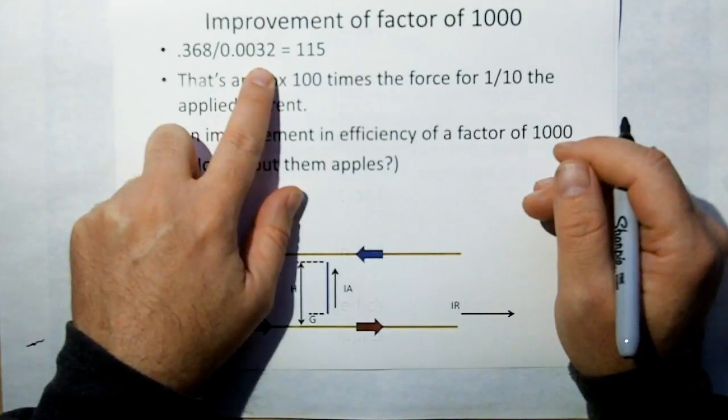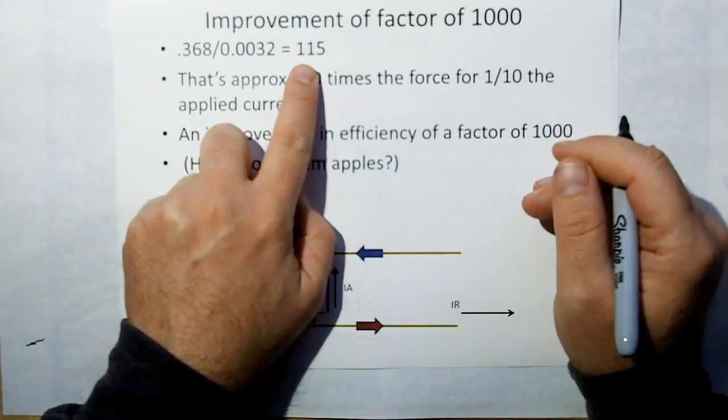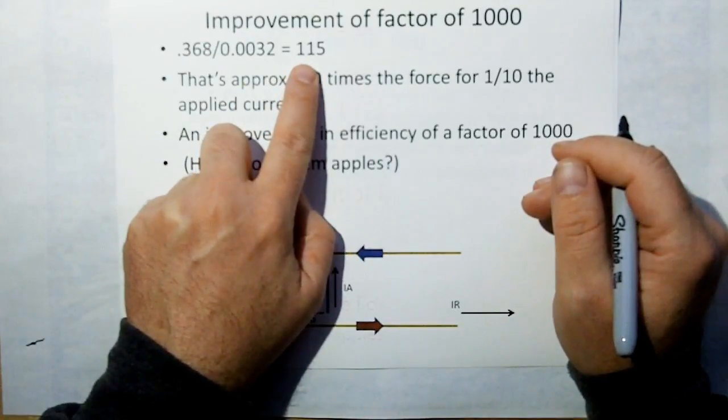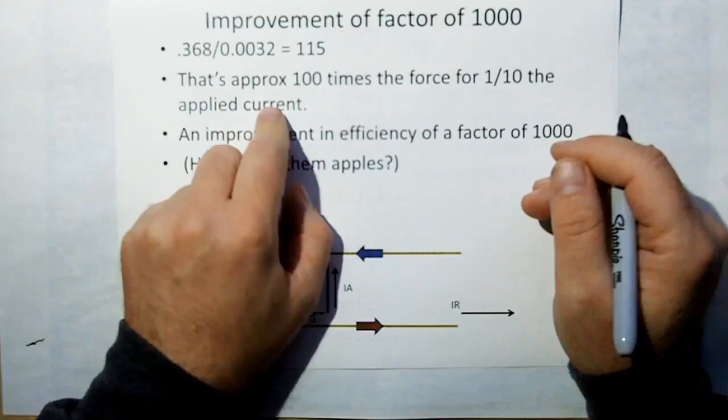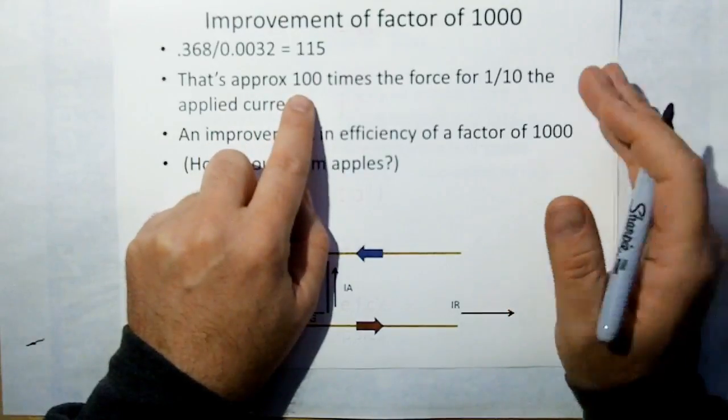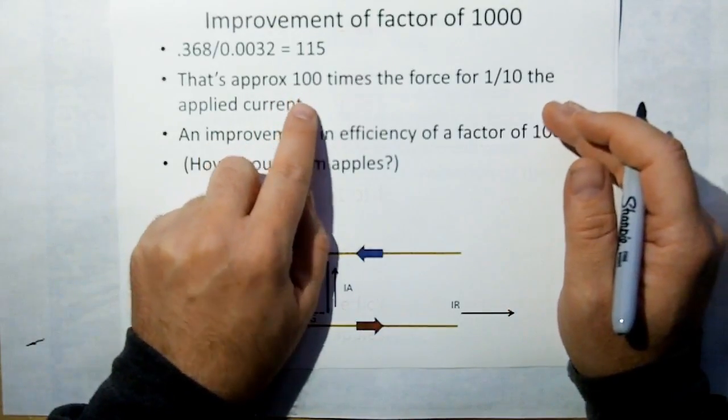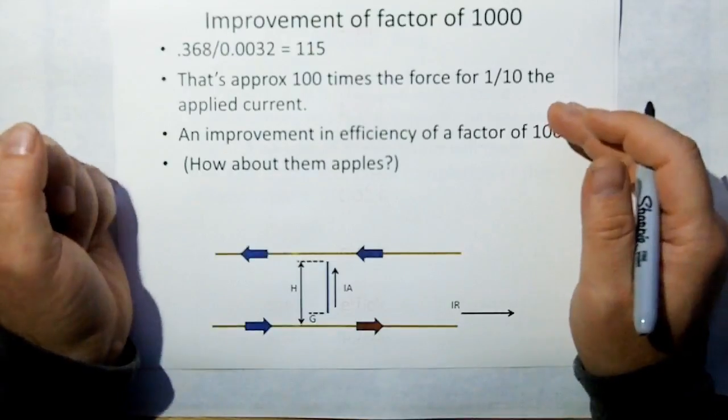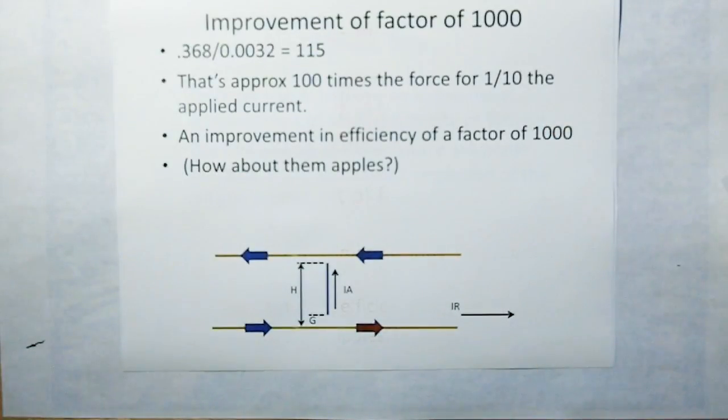So if we compare 368 millinewtons to the 3.2 millinewtons of the classical way of doing things, we already have an improvement of 115 times. That's approximately 100 times the force for one-tenth the applied current for an improvement in efficiency of a factor of a thousand. How about them apples?